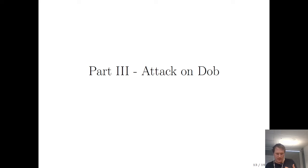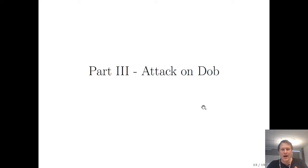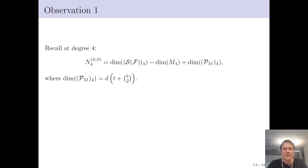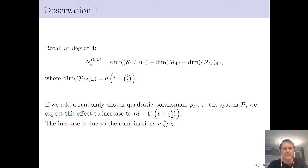After categorizing the number of degree-fall polynomials up to degree five, including for the hybrid method, we can now propose a new attack. Recall the degree-four formula had a correction component equal to d times the number of quadratic modifier polynomials. What happens if we add a randomly chosen quadratic polynomial P_r to the system? We expect the d part to grow by one — both from theory and in practice — because we get new combinations of all the quadratic modifier polynomials times this new polynomial.